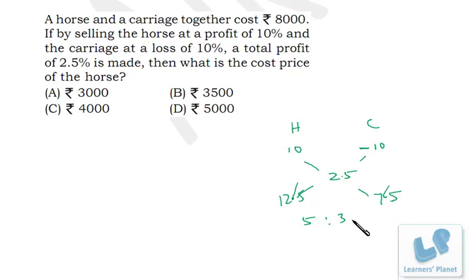Whenever you are having a profit and loss problem based on one item where you are making a profit and on the other item you are making a loss, overall there may be a profit or loss. If there is a loss, put a negative sign over here and proceed the same way.